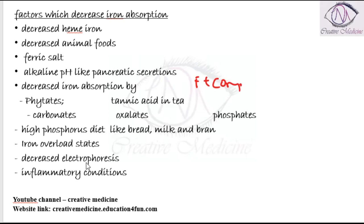If there is less hematopoiesis, then iron absorption is decreased because if the RBC production is less, obviously the requirement of iron is less, so the iron absorption is decreased. It is also decreased in inflammatory conditions.